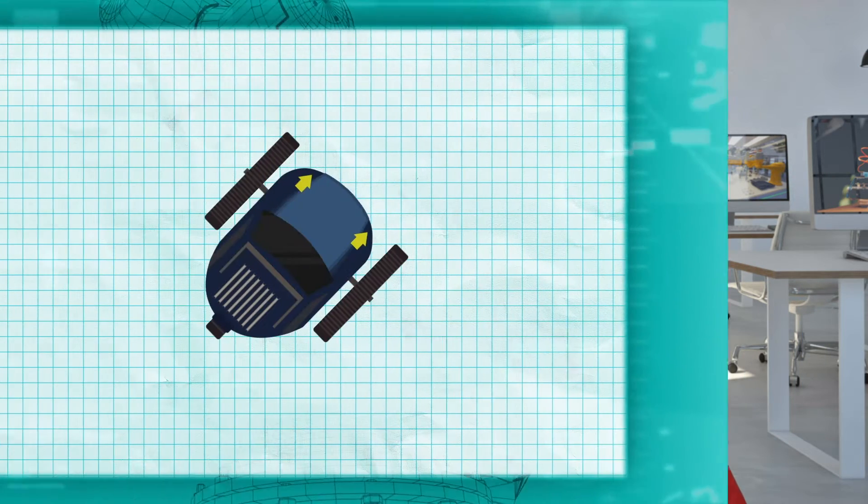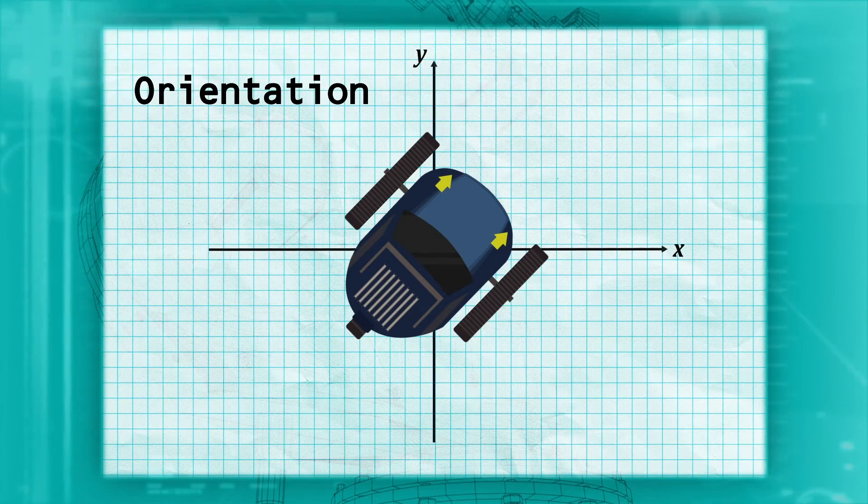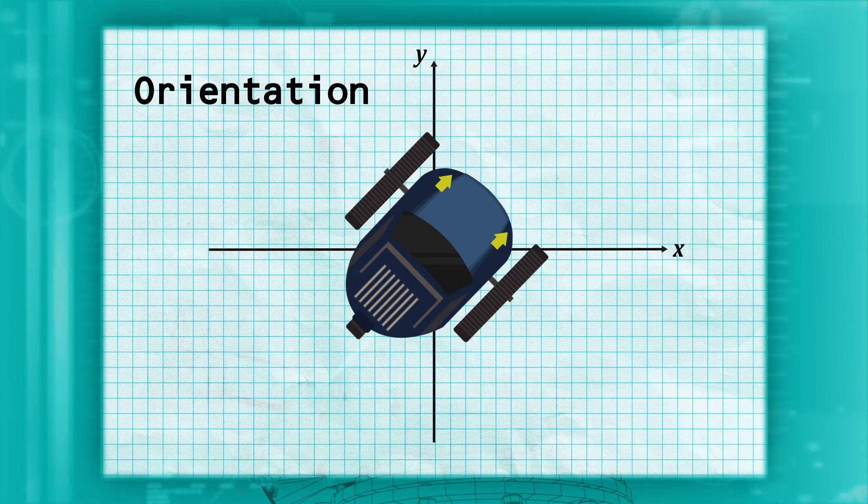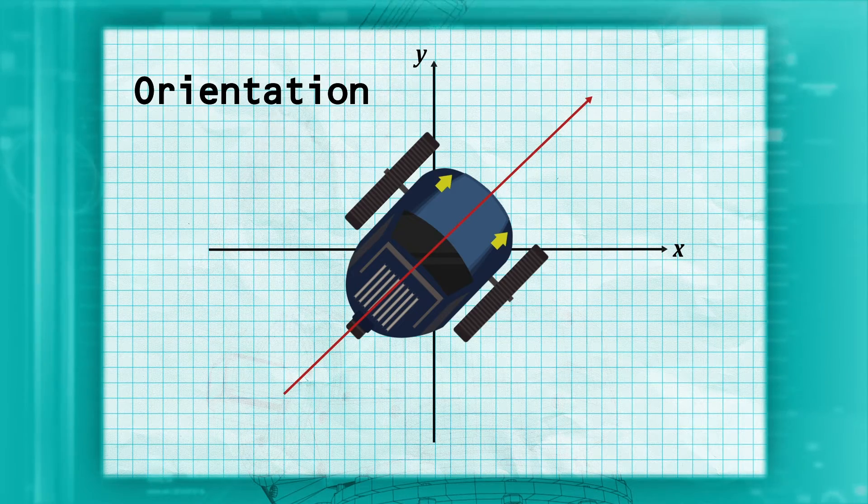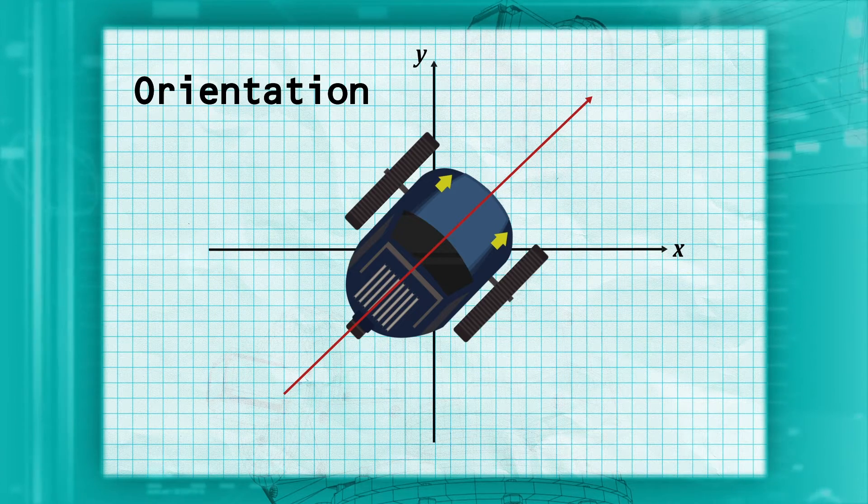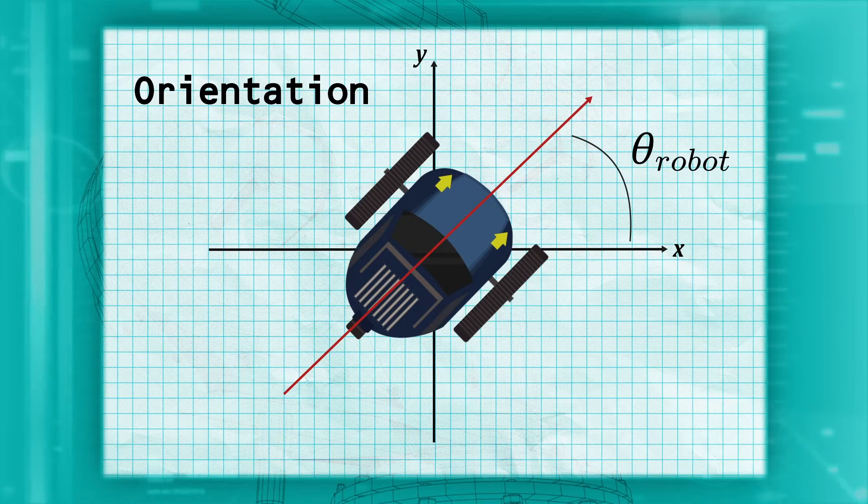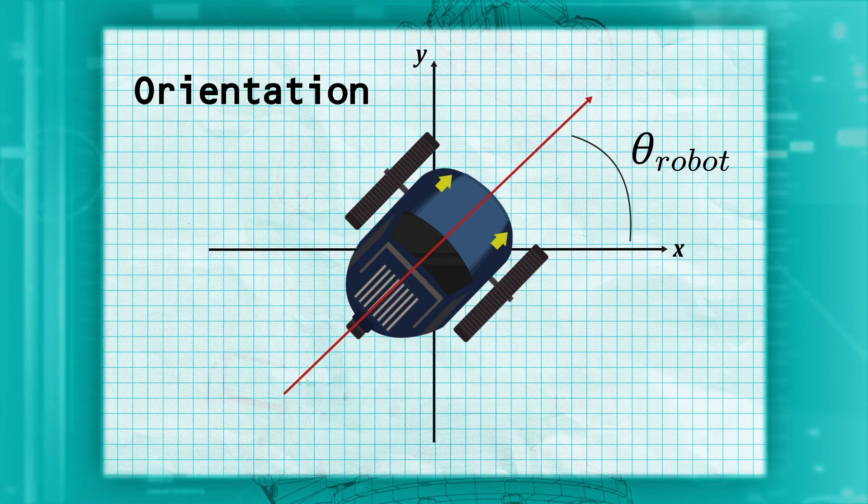Let's start by defining some terms we will use to discuss robot motion. We will call the direction a robot is facing its orientation, or heading, and it is commonly measured with respect to the x-axis. In other words, the robot's orientation, typically annotated with the Greek letter theta, is the angle between the x-axis and the direction the robot is facing.